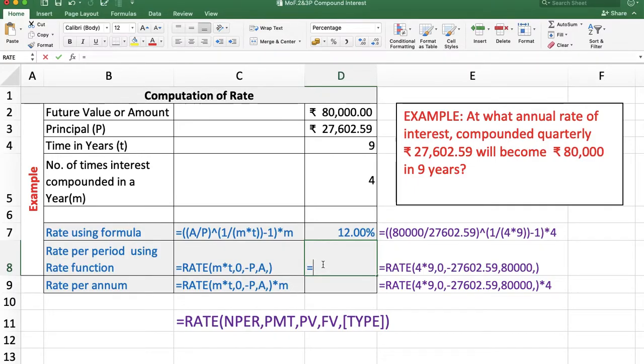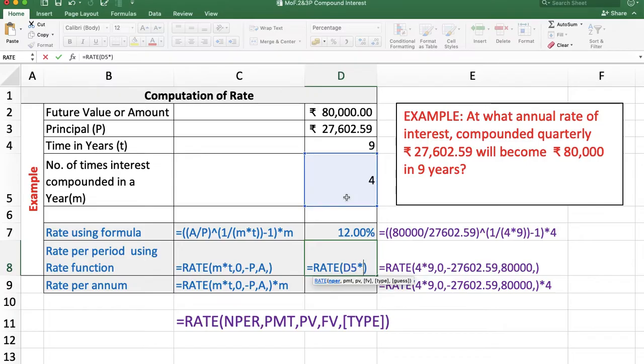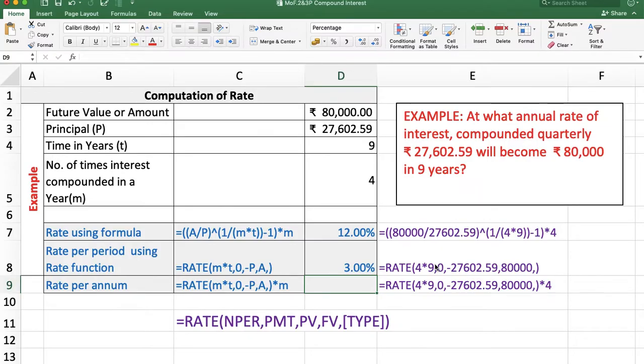Now using the RATE function: =RATE(M*T, 0, -PresentValue, Amount). Enter. The answer is 3%, which is the rate per period. Because interest is compounded quarterly, the rate per quarter is 3%.